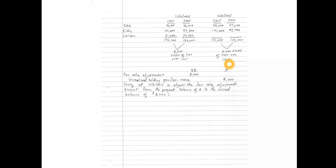At December 31st, 2014, we need to establish a balance in the fair value adjustment account of $8,000, so that when added to the investment account balance of $172,000, the total equals the fair market value of $180,000. The entry is: debit the fair value adjustment $8,000, and credit unrealized holding gain or loss — income account — for $8,000.